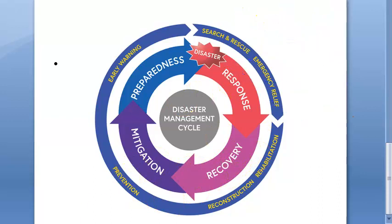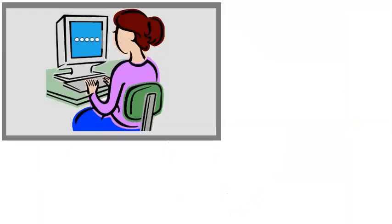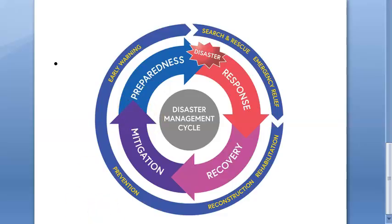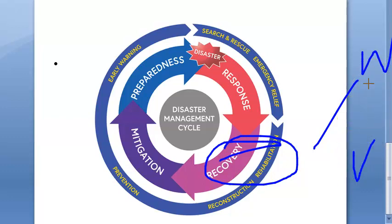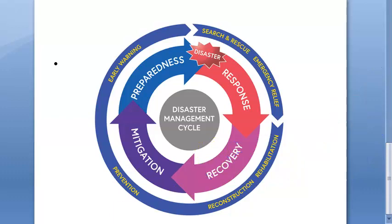The second stage in the disaster cycle is recovery, which includes rehabilitation. In rehabilitation, you address water supply, sanitation, personal hygiene, food safety, and vector control — for example, after a flood. Reconstruction of damaged infrastructure is also part of this phase.